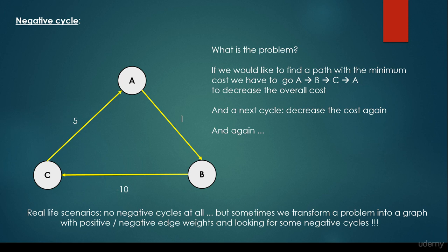Real life scenarios, of course there are no negative cycles. For example, for Google Maps, of course there are no negative cycles because it would mean that you have to take several cycles and it's going to decrease the cost. Of course it's not going to happen. So in real life scenarios, no negative cycles at all,